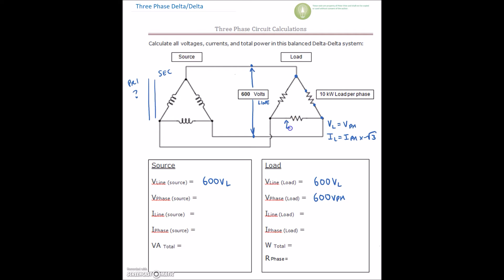I'm going to draw it down here so we have some room to work. That's 600 volts across this resistor, this resistor, and this resistor. Over here on the transformer, we have 600 volts on the line, and that voltage comes right in here. Across the phase, we're going to have 600 volts on the phase as well.